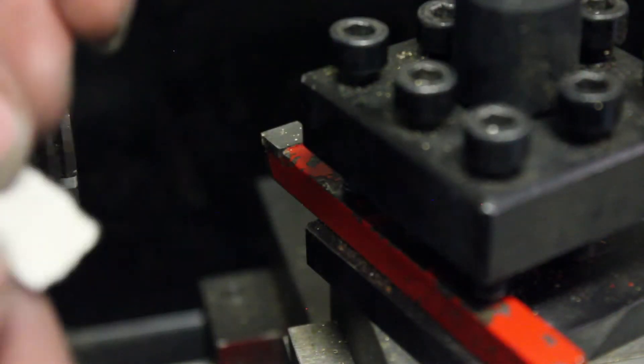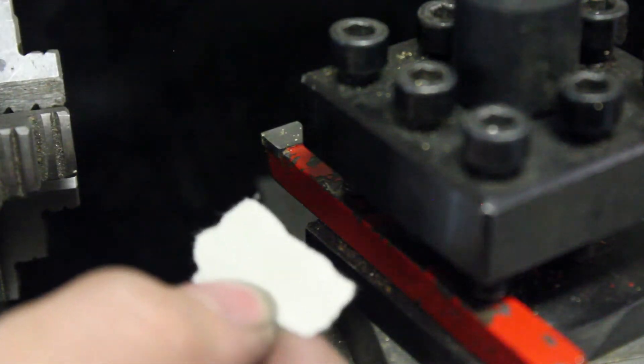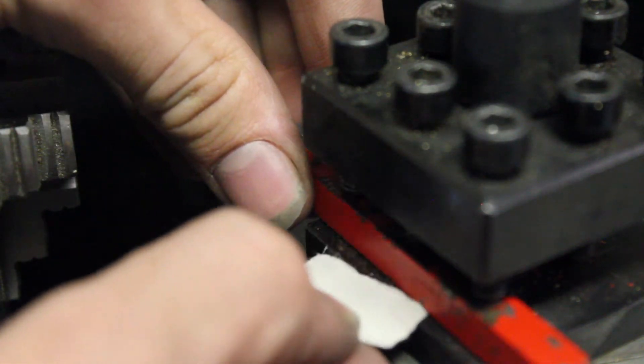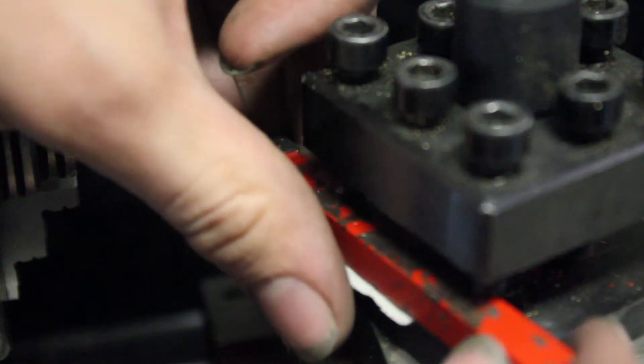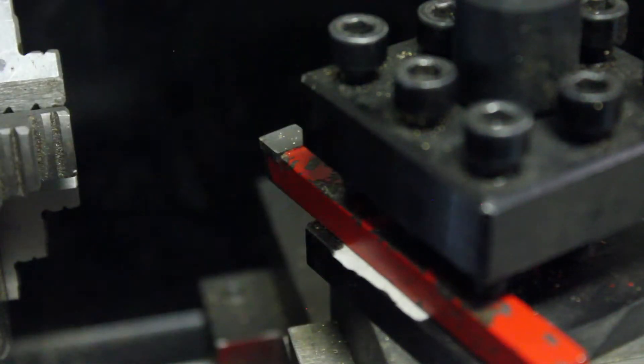And then if you take something thin, like here's a piece of paper, which is about 4 thousandths of an inch thick. If I put it underneath my tool and then tighten it back down again, I should have a little bit higher of a tool.